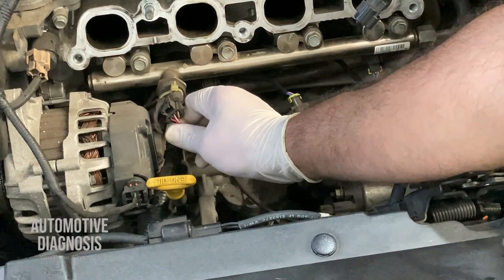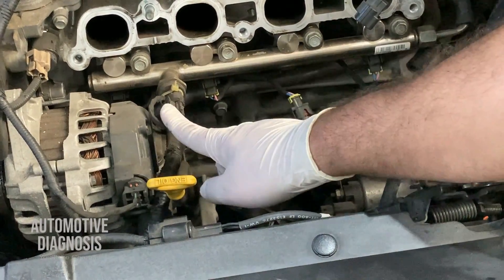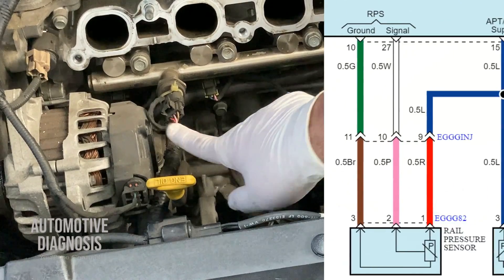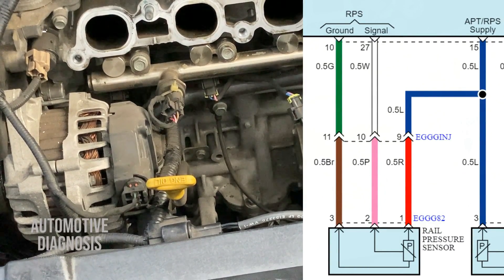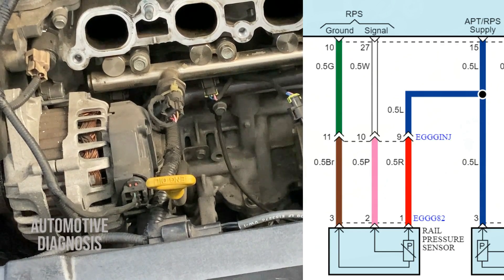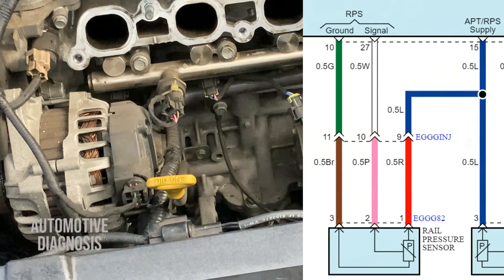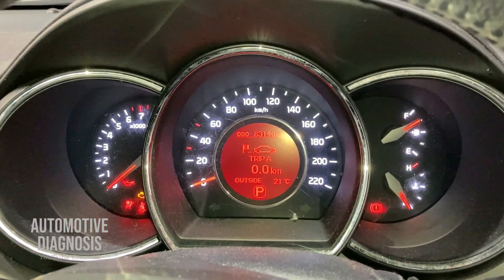The fuel rail pressure sensor has three wires — red, pink, and brown — which are exactly what we see on the wiring diagram on screen. All three wires are connected to the ECM as well. Now let's see how we can test the rail pressure with the scan tool.